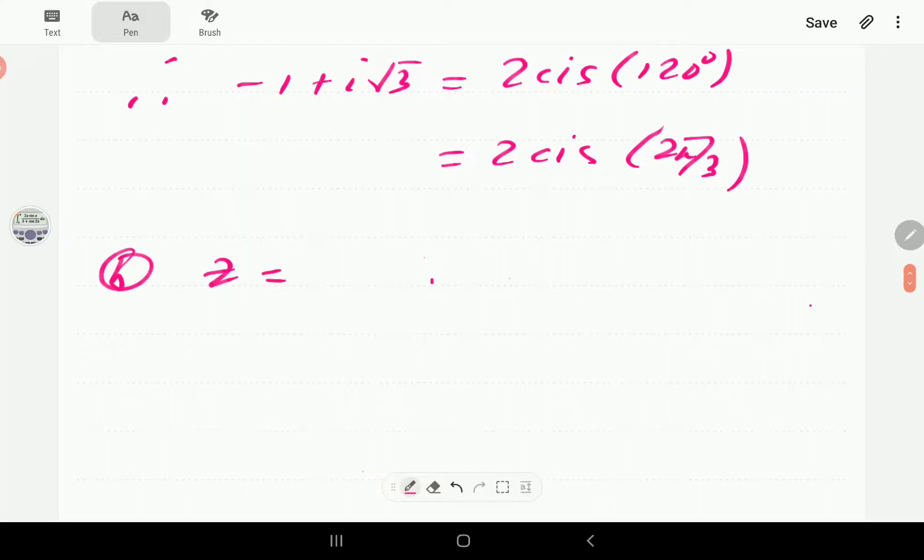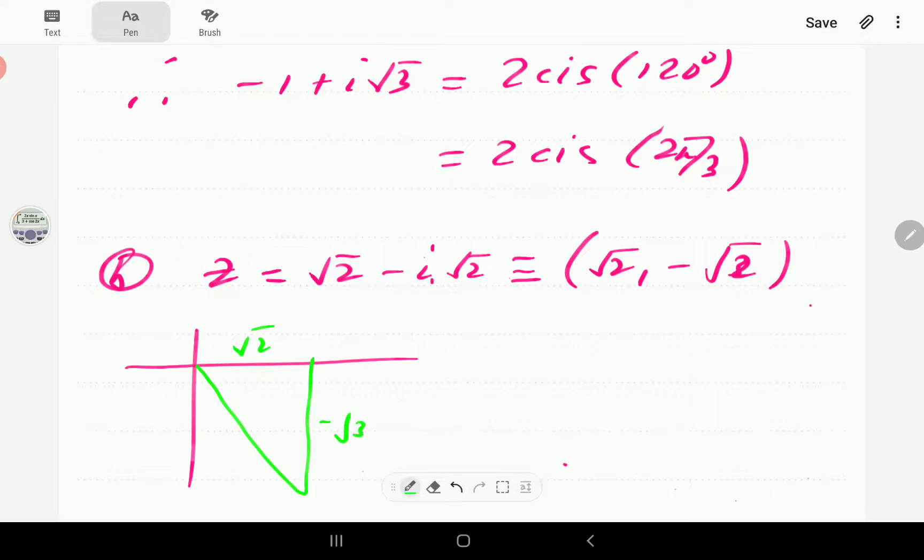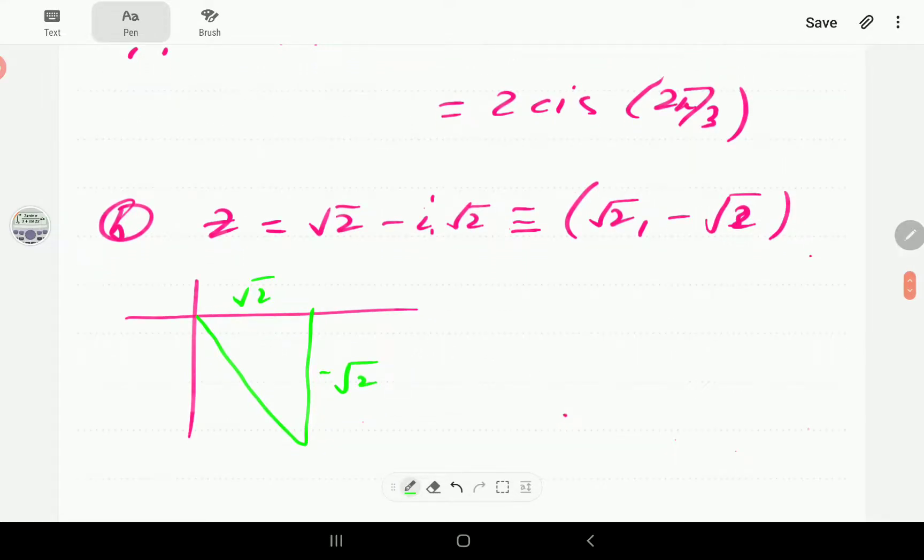If we go to b, we have got root 2 minus i root 2. Write this in coordinate form. The x is root 2. The y is negative root 2. That means this time our complex number is in quadrant number 4. This is root 2. This is negative root 2. Some of these, once you know the values, you can work out the angle in this case. Straight away, we know that it's going to be 45 because these two are equal. We've got an isosceles triangle.